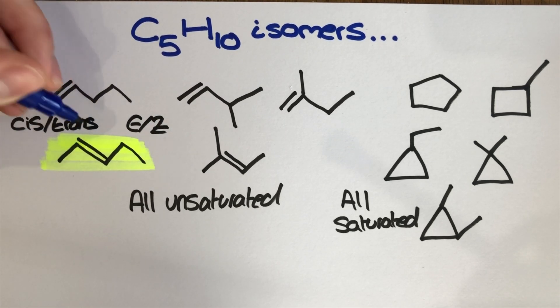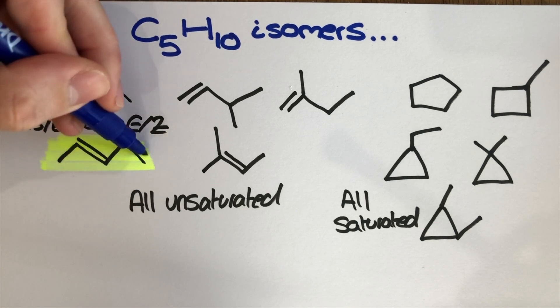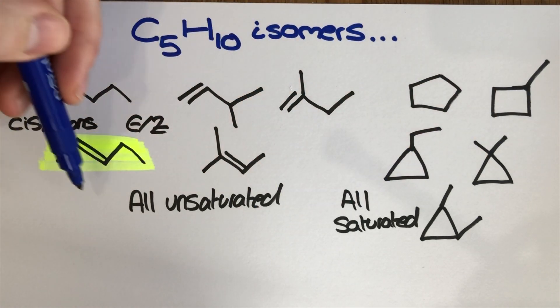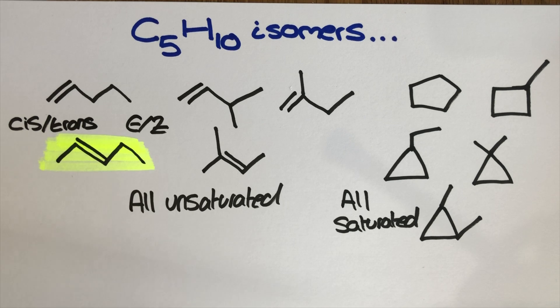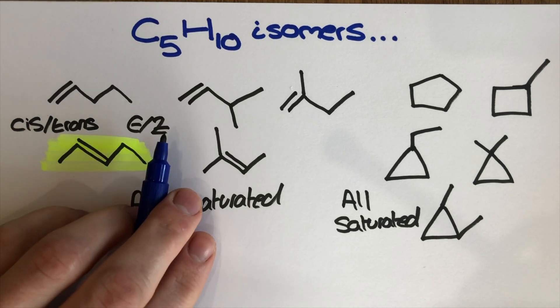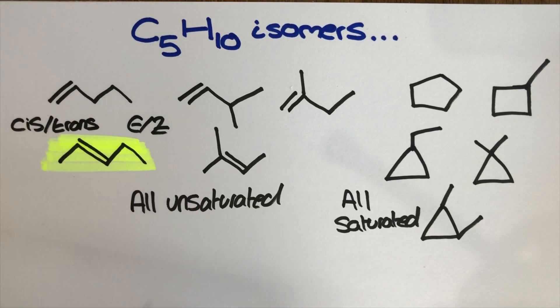And in fact remember these are types of stereoisomerism whereas everything else we've looked at is structural isomerism. To find out more about stereoisomerism click the i at the top of the screen right now to be taken to a video that outlines examples of E/Z and cis/trans stereoisomerism or click the links on screen at the end of this video.